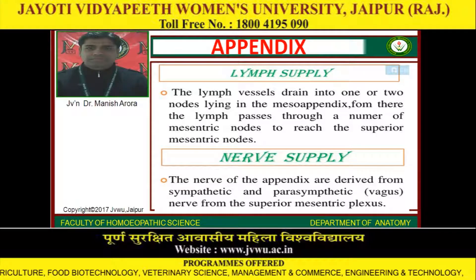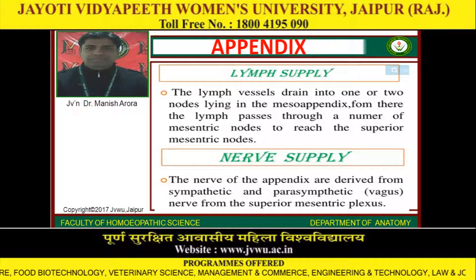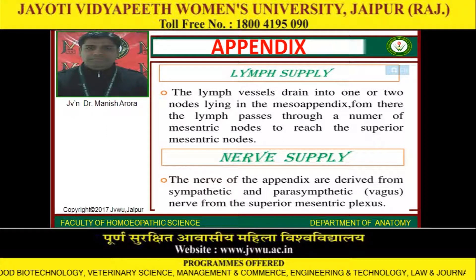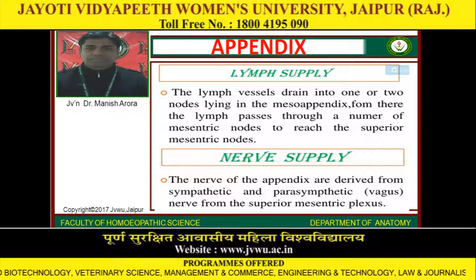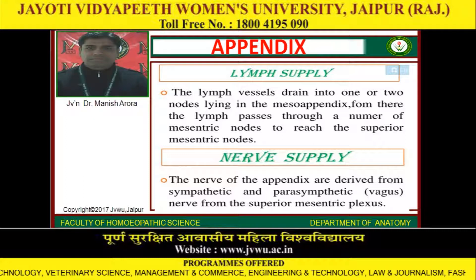Lymph supply: The lymph vessels drain into one or two nodes lying in the meso-appendix. From there, the lymph passes through a number of mesenteric nodes to reach the superior mesenteric nodes. Nerve supply: The nerves of the appendix are derived from sympathetic and parasympathetic vagus nerve fibers from the superior mesenteric plexus.